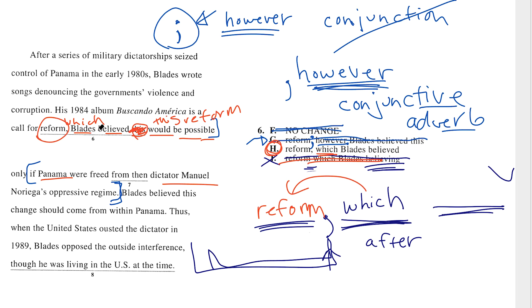The reason this question is hard is that if you're paying attention to your ears, your ears are going to love F — which is no change, which is a run-on. And your ears are also going to love G because, punctuation aside, G works wonderfully and even has a transition quote-unquote. But because however is not actually a conjunction, G is incorrect. The right answer is H.